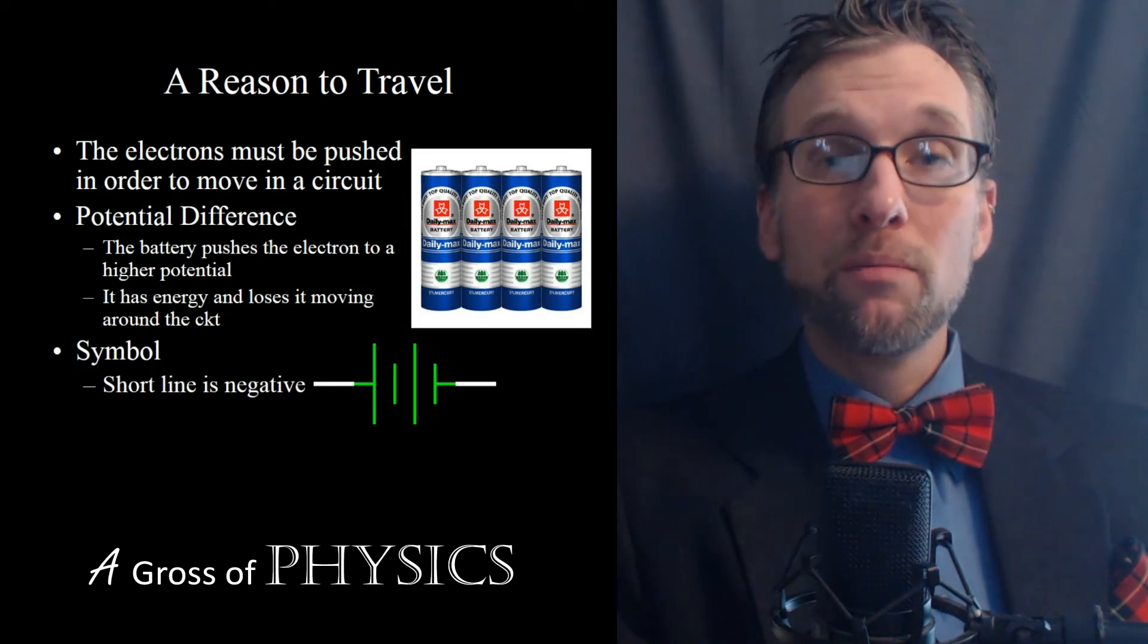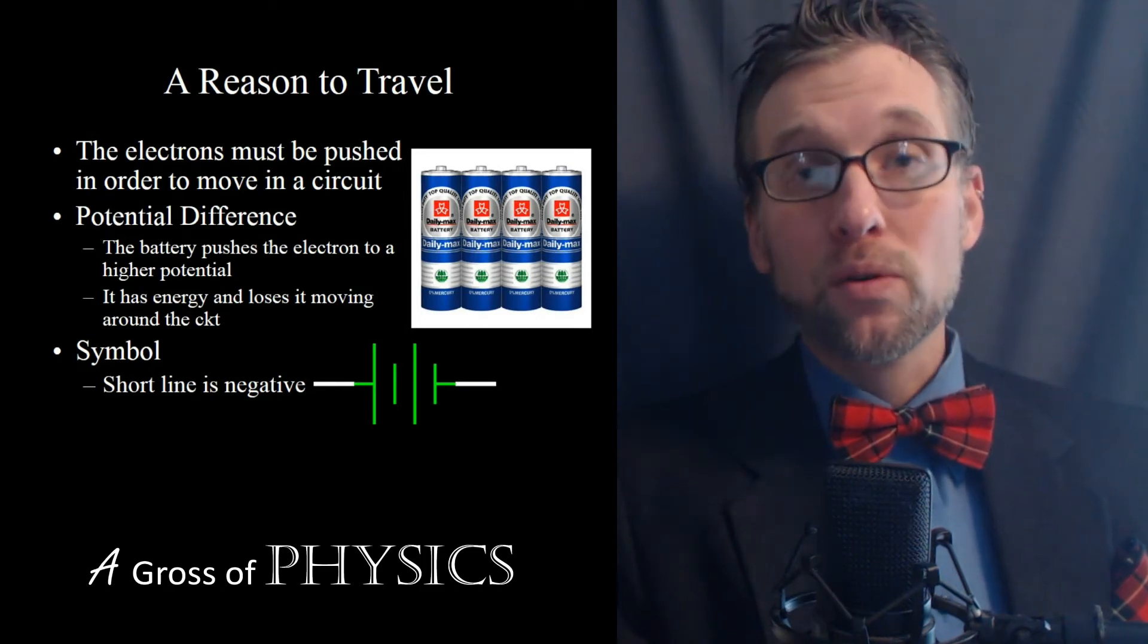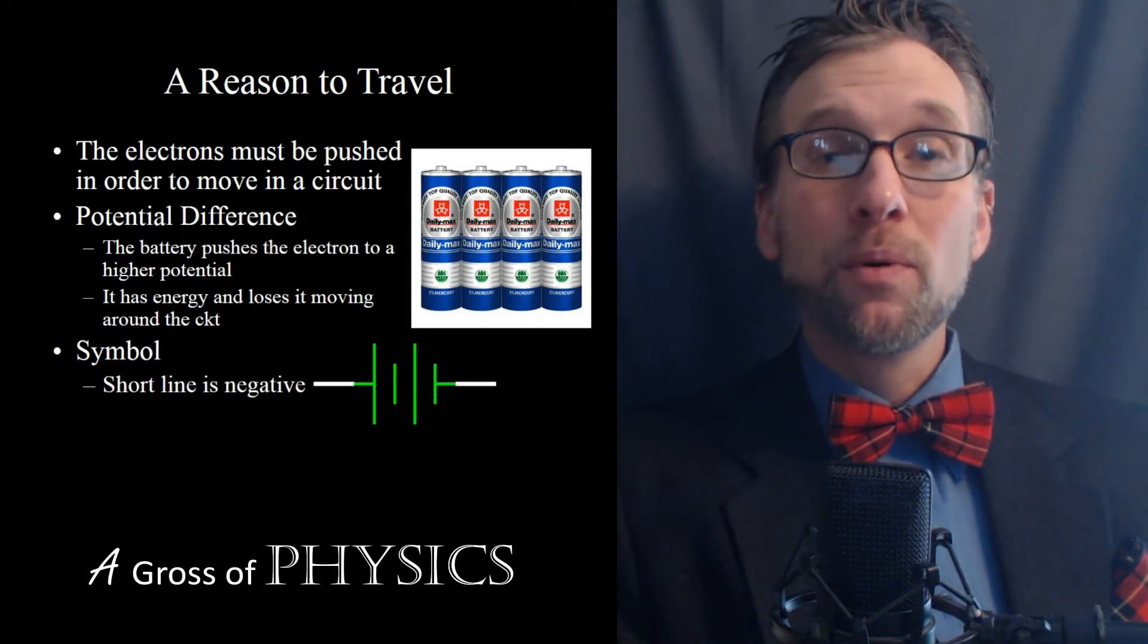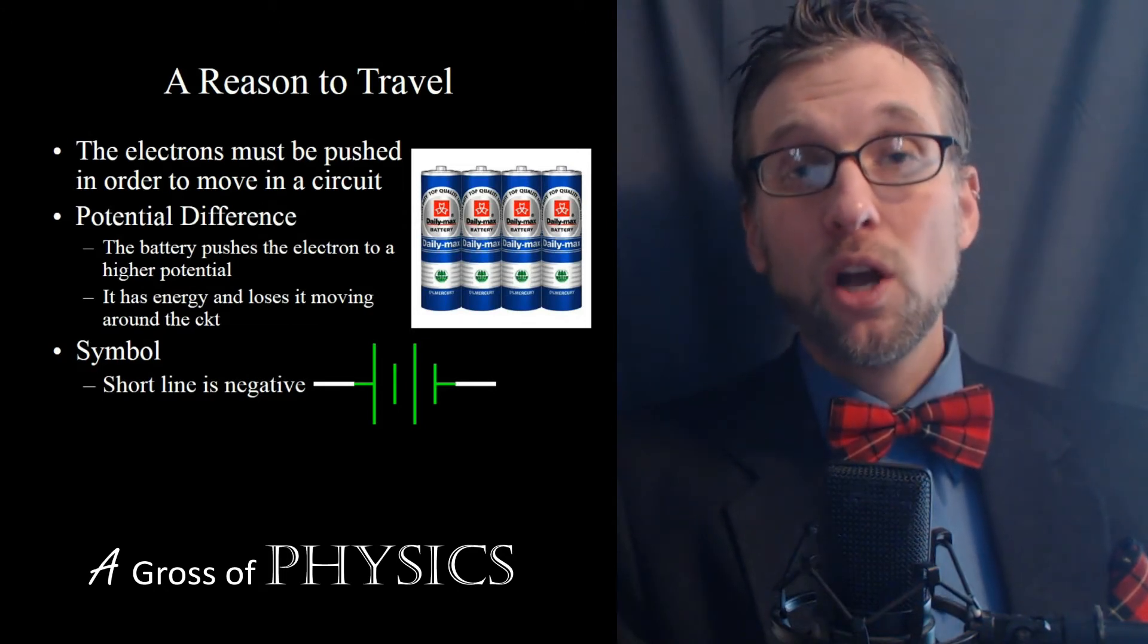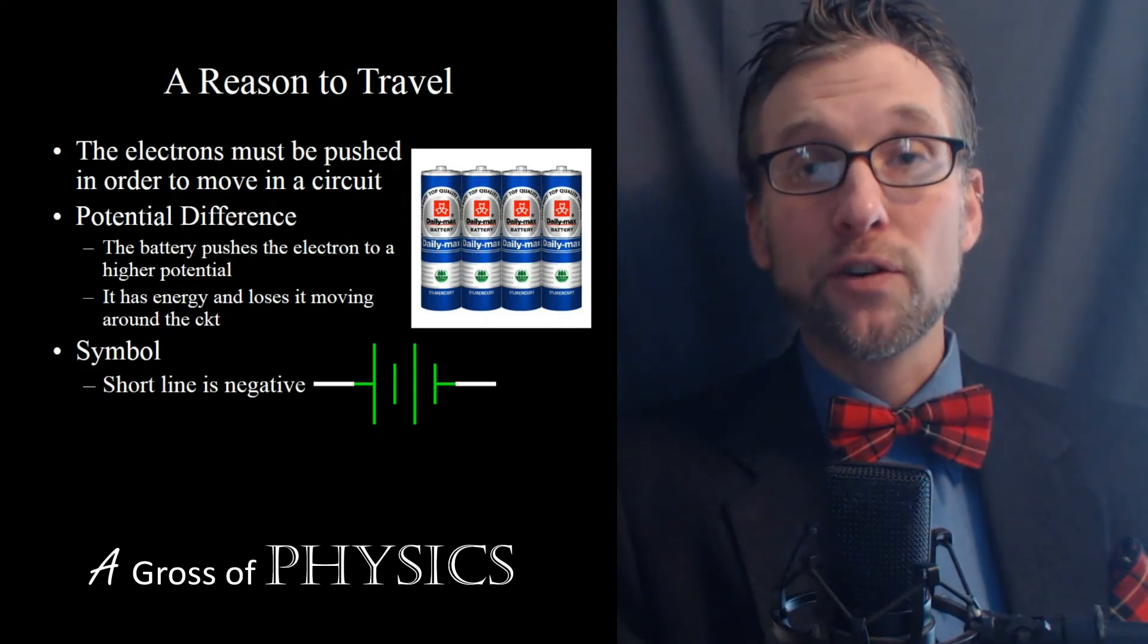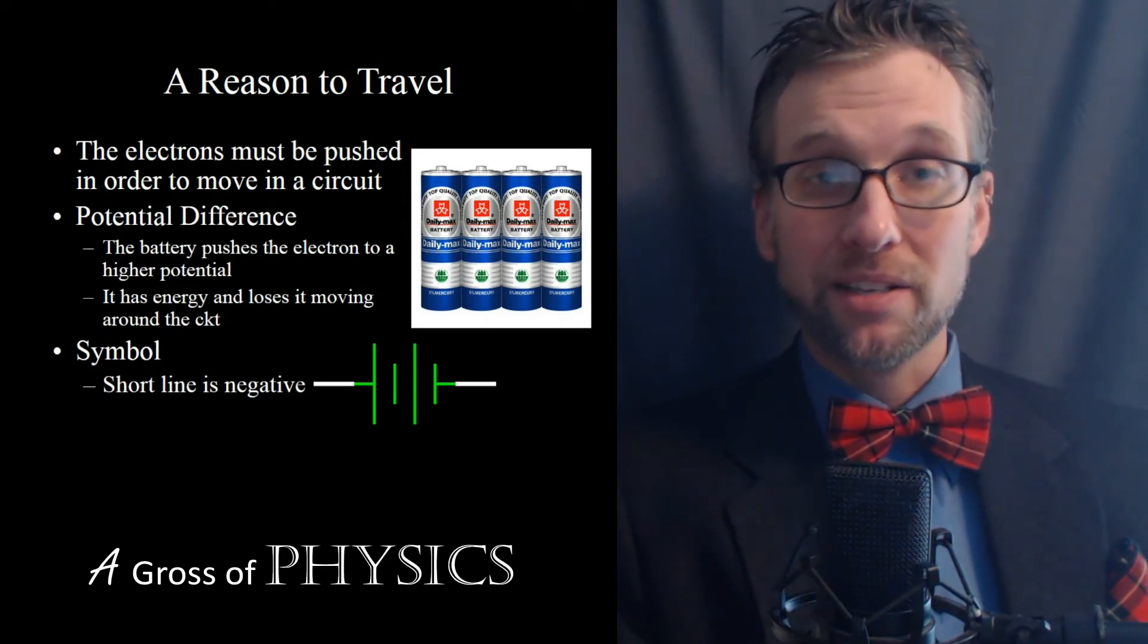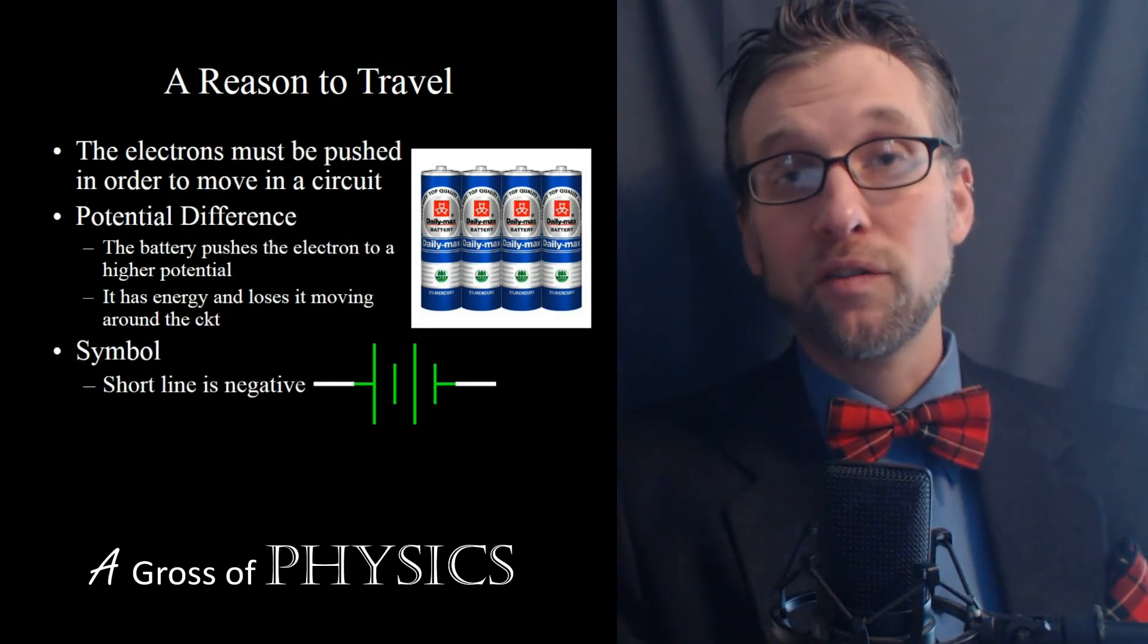Now the push is typically given by a battery, or a power supply, or a wall outlet. And that provides a potential difference. Now the potential difference is also known as the voltage. So if we have a voltage difference between one end of the terminal and the other, typically positive and negative, the electrons are going to flow.